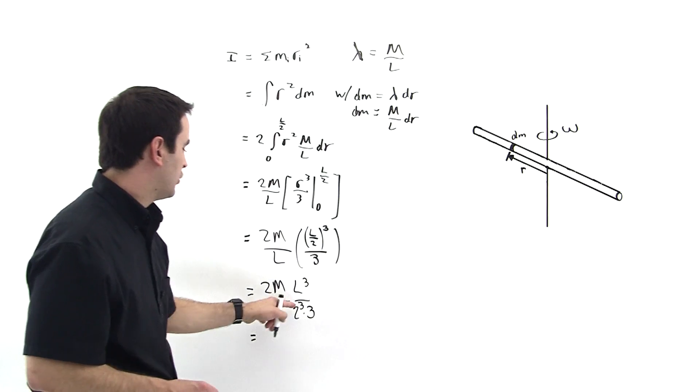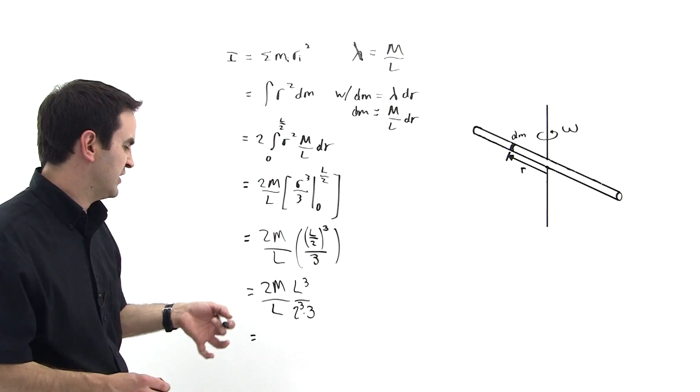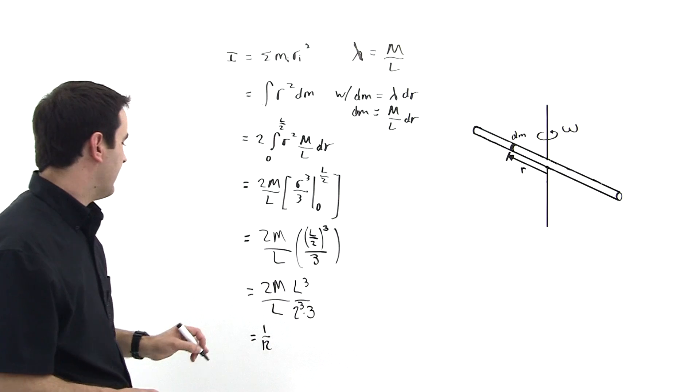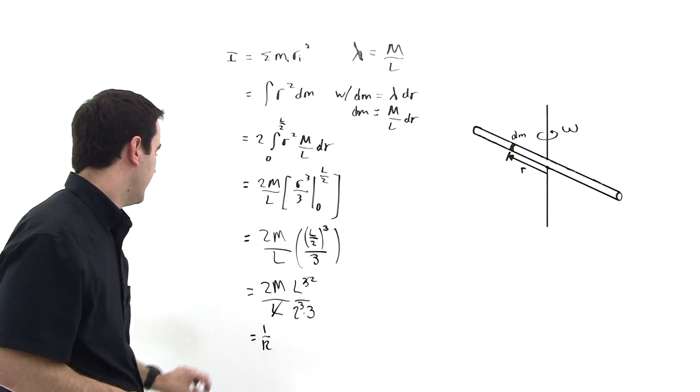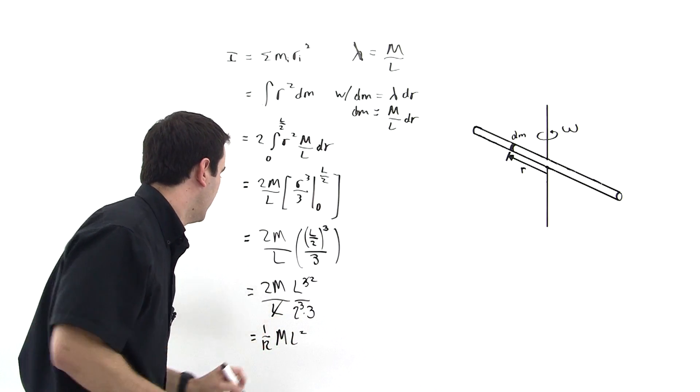Okay. Notice 2 cubed is 8. 8 times 3 is 24. And we have 2 over 24, which reduces to 1 12th. So the numbers reduce to 1 12th. And then this cancels with one of these. So this becomes a 2. And it's 1 12th ml squared. Right?